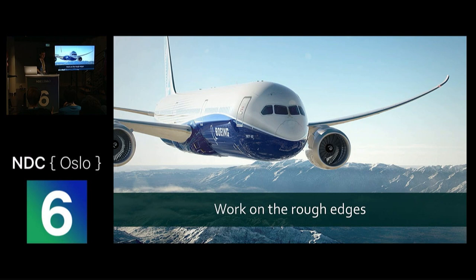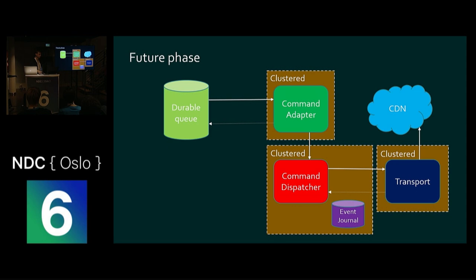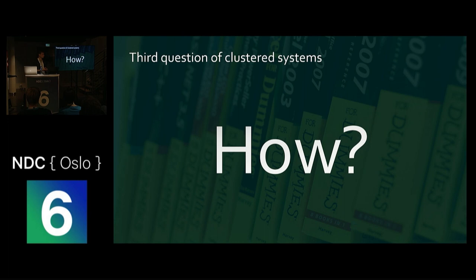We're also planning work on the rough edges. There's another durable queue acting like a transaction guard between parts of the system. Now that we've gained experience with clustering the actor model, we're considering uniting all these nodes into a single system with durable queues only at the entrance. That brings us to the question requiring the longest answer: how? We built some demos and need some definitions first.